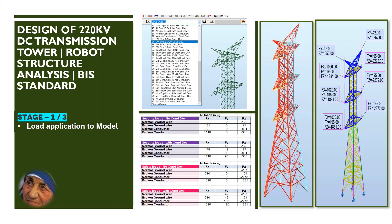Welcome viewers. In this 3-stage video series, we are going to do the design of a 220 kV transmission line tower using Robot Structural Analysis with Indian standard. This is the first stage of three, in which we are going to discuss about the load application to the model.